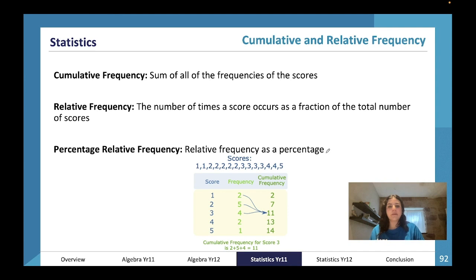Cumulative frequency is the sum of all of the frequencies of the scores. Let's have a look at this table. It is literally just adding up all the frequency and putting them in each column. So two is two, two plus five is seven, two plus five plus four is eleven, two plus five plus four plus two is thirteen, two plus five plus four plus two plus one is fourteen—the sum of all the frequencies of the scores.